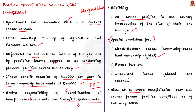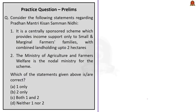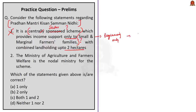Based on estimates from the agriculture census of 2015-16, the number of beneficiaries to be covered is about 14 crore. As of February 2020, over 8.46 crore farmer families have been given the benefits. Now the question: Statement 1 says PM Kisan is a centrally sponsored scheme providing income support only to small and marginal farmers with combined land holdings up to 2 hectares — this is incorrect, as it is a central sector scheme now extended to all farmers. Statement 2 says the Ministry of Agriculture and Farmers Welfare is the nodal ministry — this is correct. Therefore, the correct answer is option B.